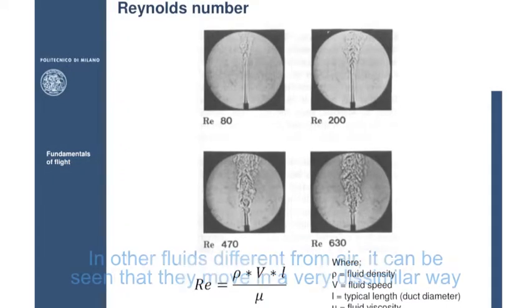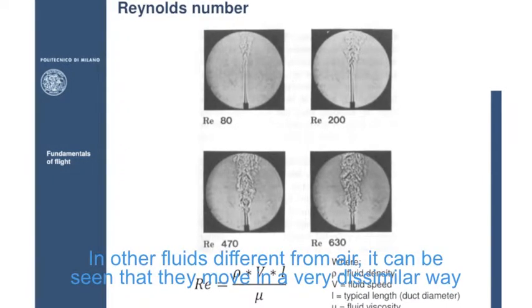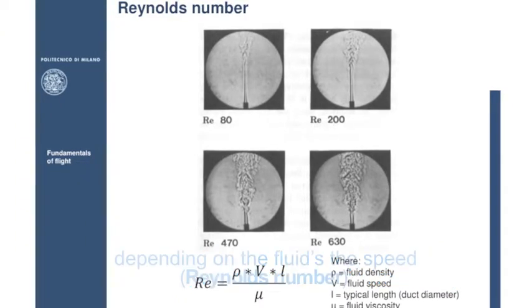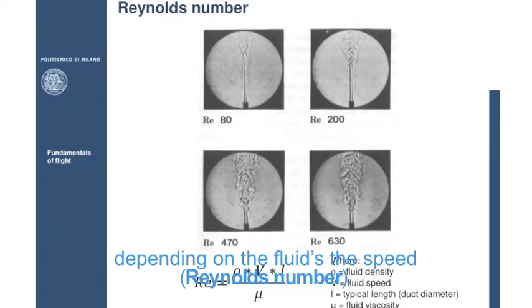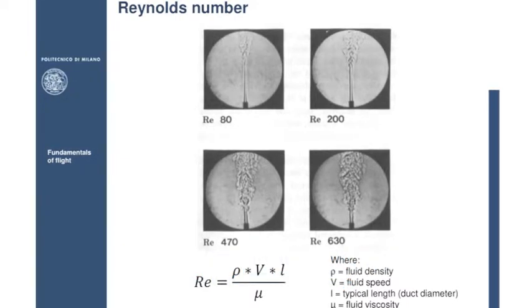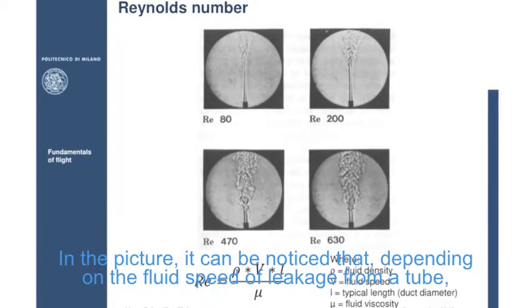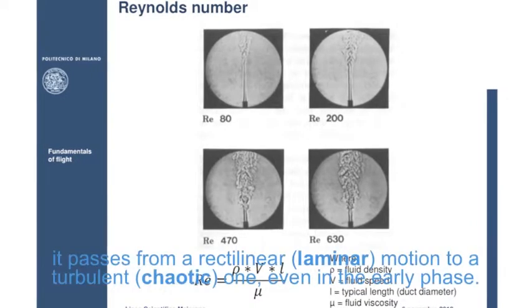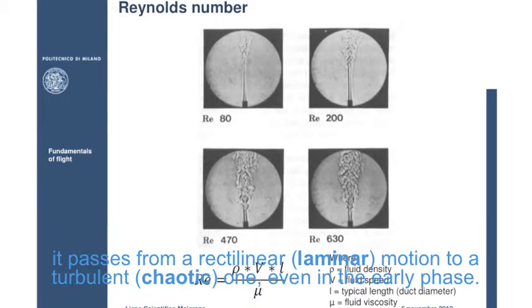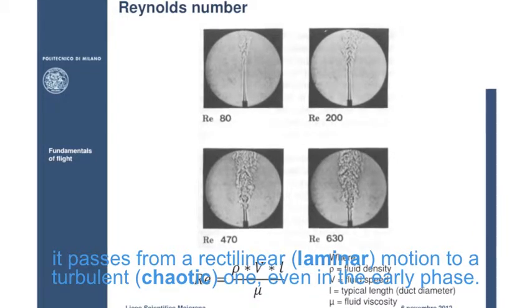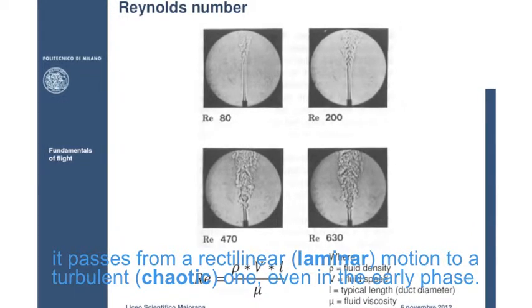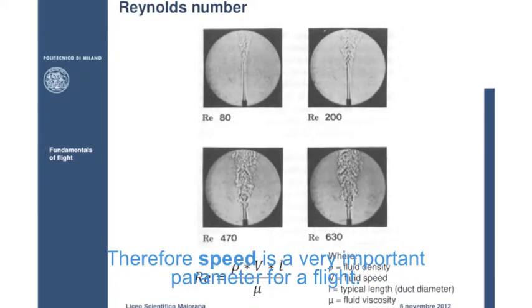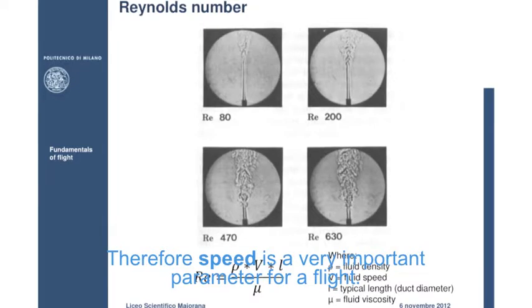In other fluids, different from air, it can be seen that they move in a very dissimilar way, depending on the fluid's speed, Reynolds number. In the picture, it can be noticed that depending on the fluid's speed of leakage from a tube, it passes from a rectilinear or laminar motion to a turbulent or chaotic one, even in the early phase. Therefore, speed is a very important parameter for a flight.